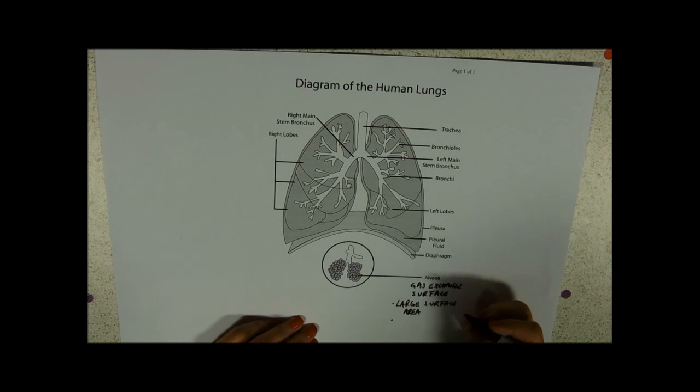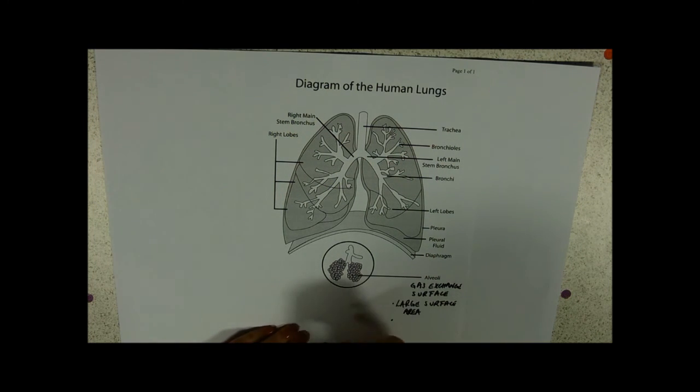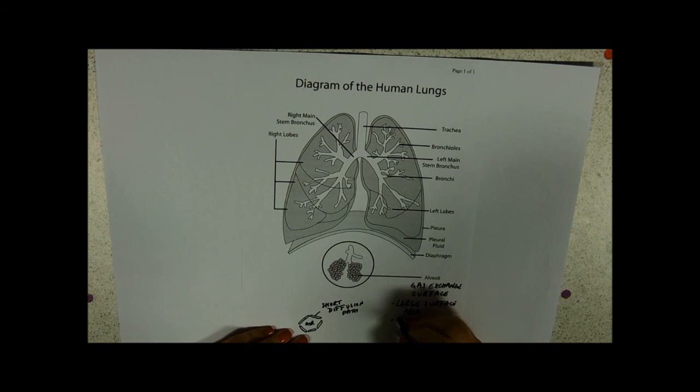If you looked at lung tissue down a microscope, which you may well have done, you'll see that the alveoli are lined with these very, very thin, flattened, single cells. So they have a very short diffusion path. The air gets drawn in there and then it's only got a very small distance to go.